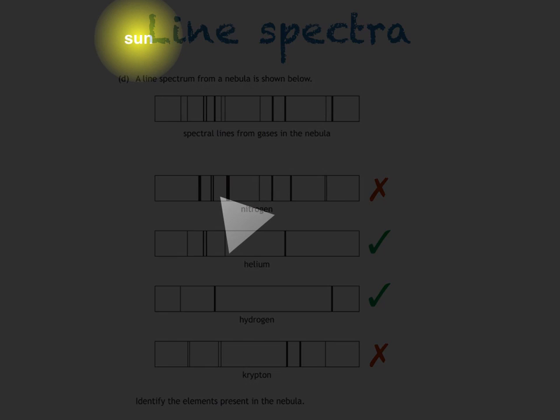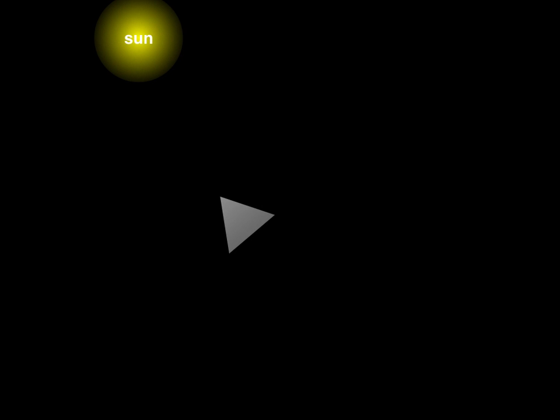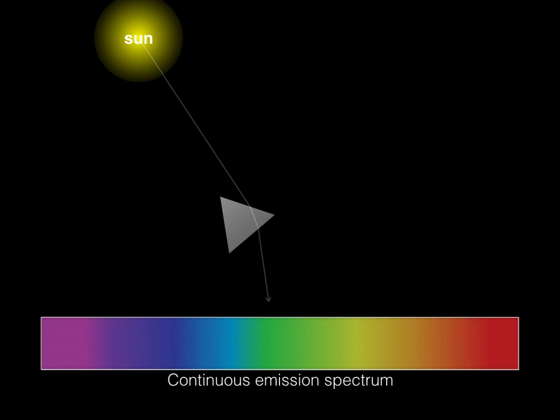Here we have a diagram of the sun. It produces light at all wavelengths in the visible spectrum. If the light from the sun alone was to pass through a prism, you would see something like this, a continuous emission spectrum.